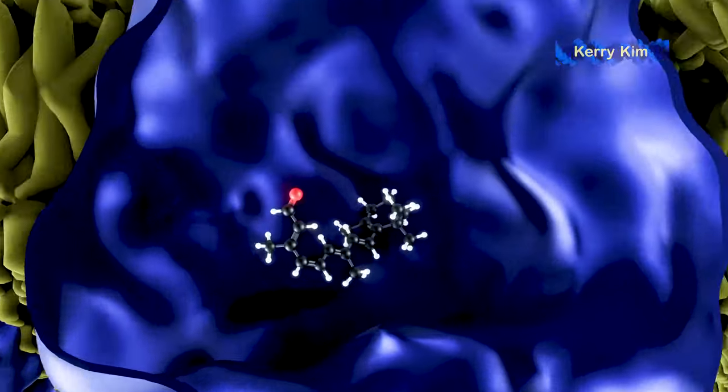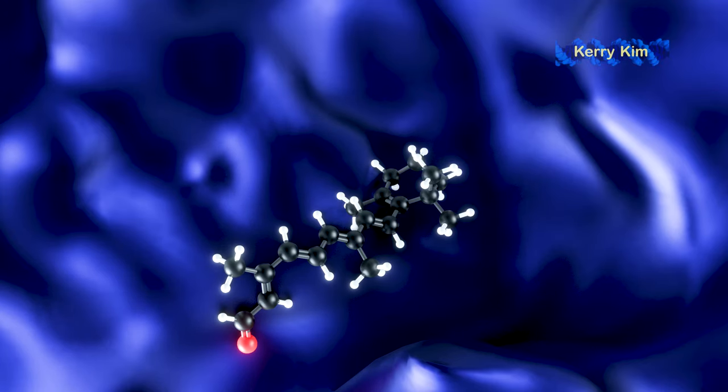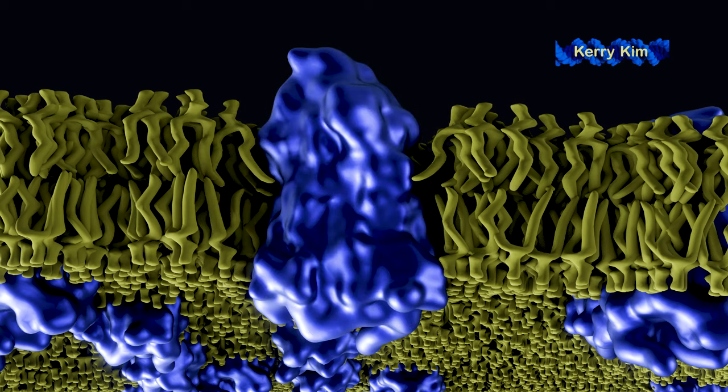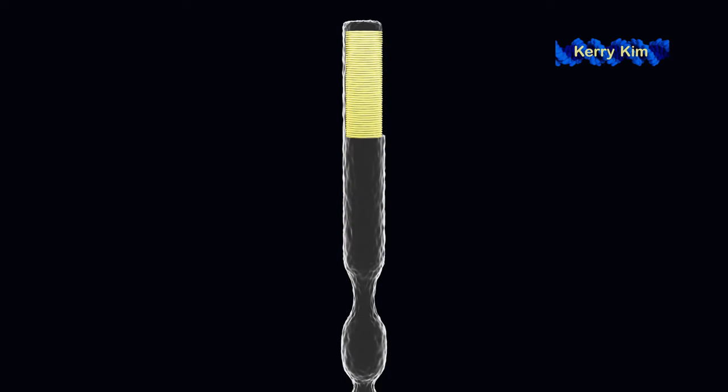When light is absorbed, it results in a rearrangement of a double bond in the middle to change it from this to this. This tiny rearrangement of retinal pushes on parts of the rhodopsin, activating it. The challenge is this: this activated rhodopsin must produce a signal large enough to affect the whole cell.